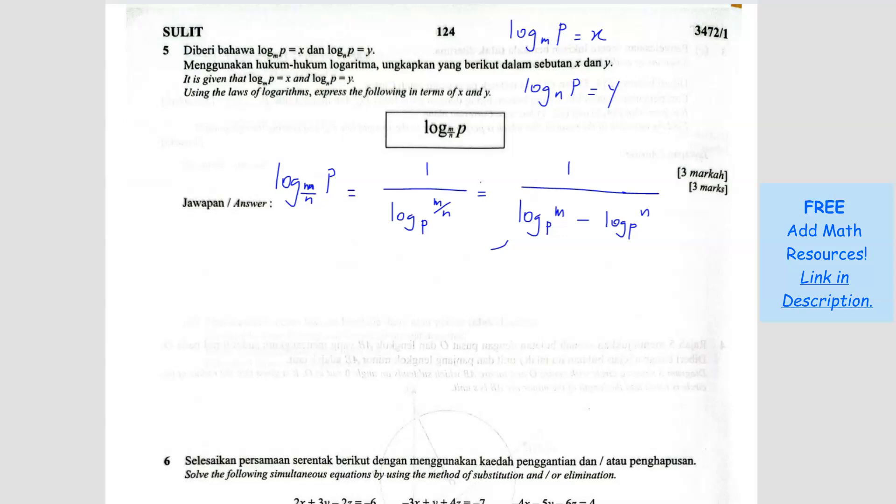Then what are we going to do next? So it's still not the same. This one is base M, but this is base P. So I cannot just make it become X. So what I'm going to do is I'm going to swap the two places again, like how I did here just now, so that I can make the M and the N as the base.